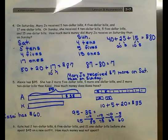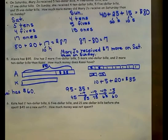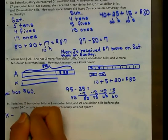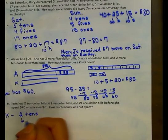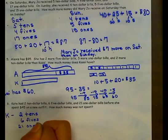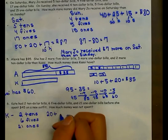Let's look at number 6. Kate had 2 $10 bills, 6 $5 bills, and 21 $1 bills before she spent $45 on a new outfit. How much money was not spent? I need to figure out how much Kate has first. She has 2 $10s, 6 $5s, and 21 $1s. To find the total, I'm going to add: 2 $10s gives me $20, plus 6 $5s gives me $30, plus 21 $1s.